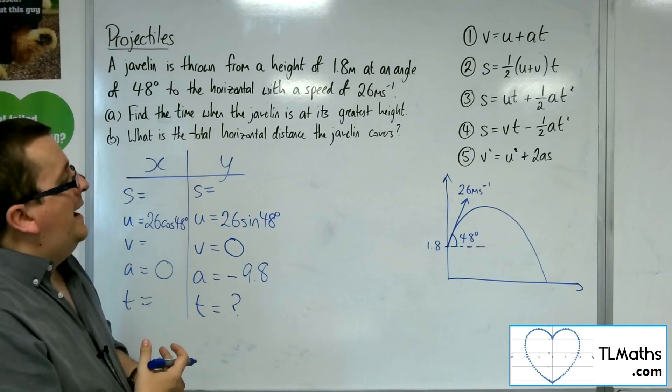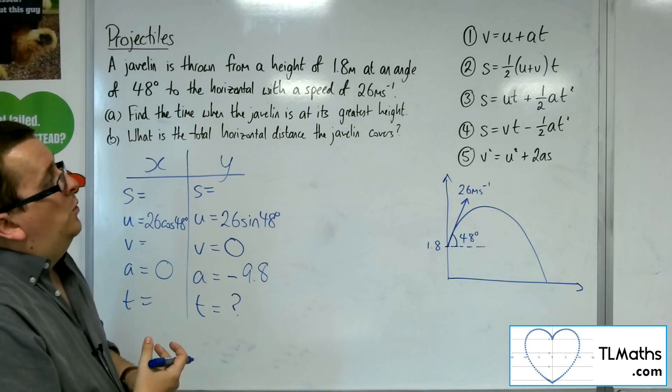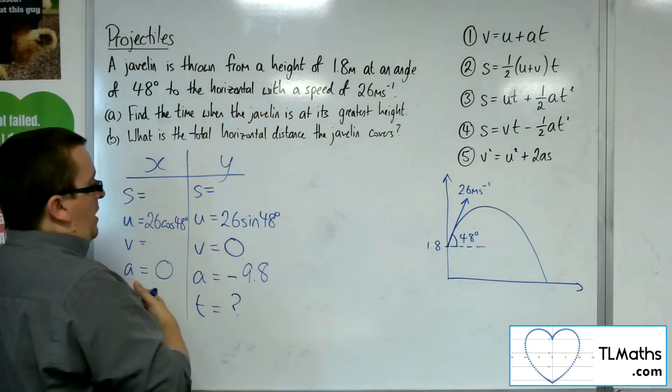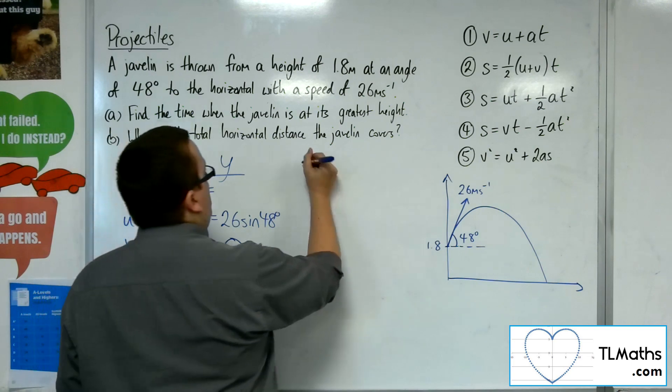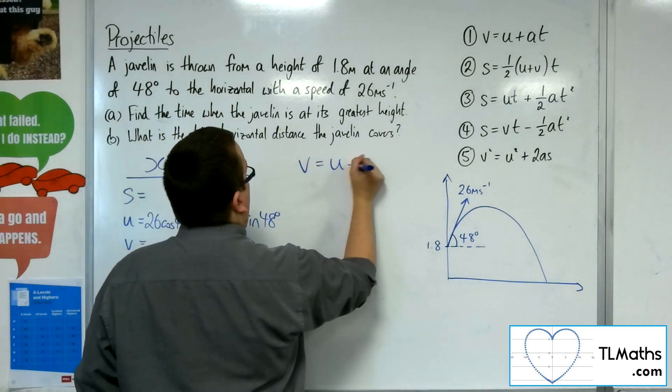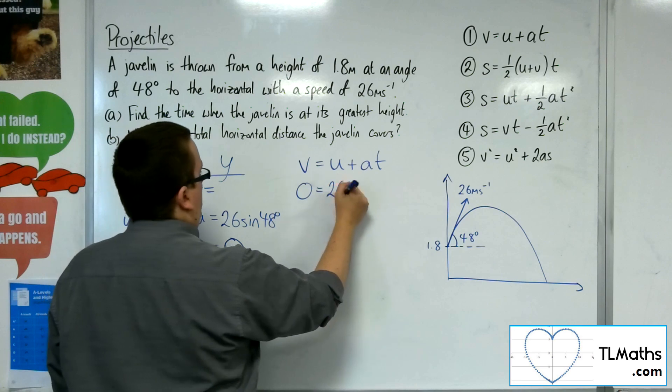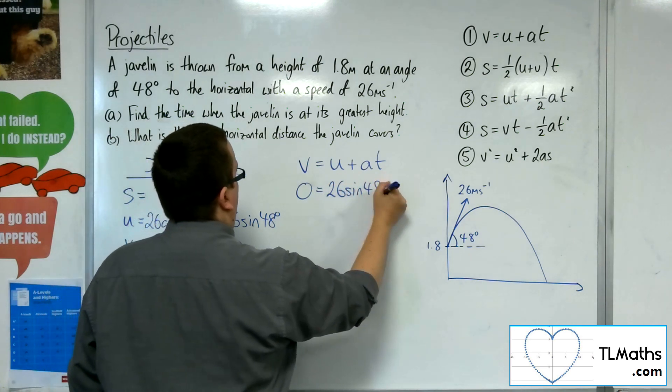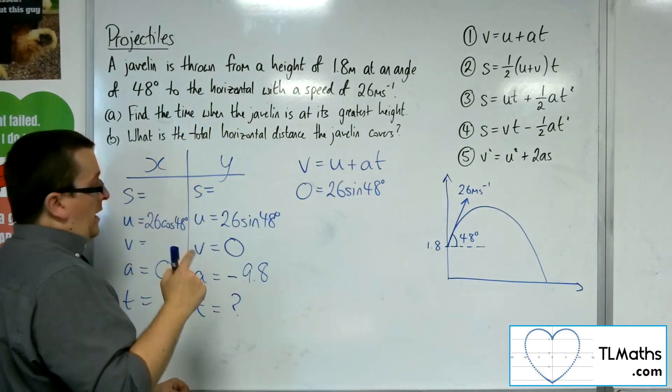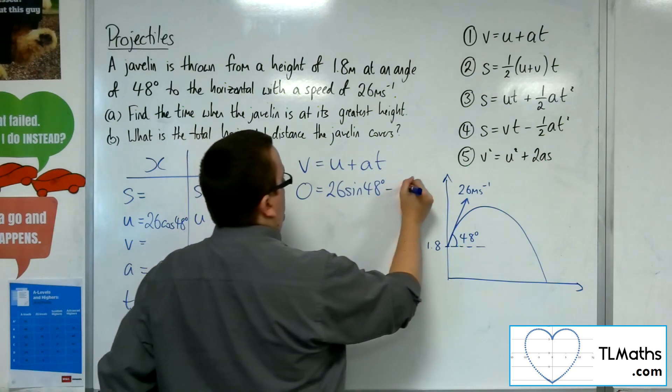So u, v, a, and I want t, so I could use equation number 1. So equation number 1 would say v equals u plus at. So 0 is equal to 26 sine 48 plus a times t, so minus 9.8t.